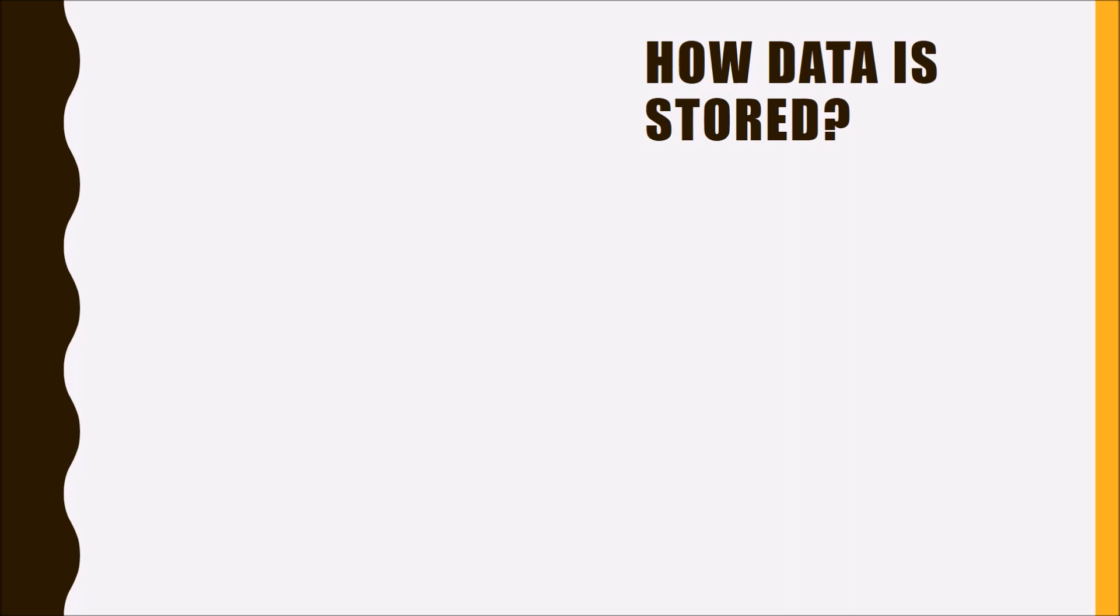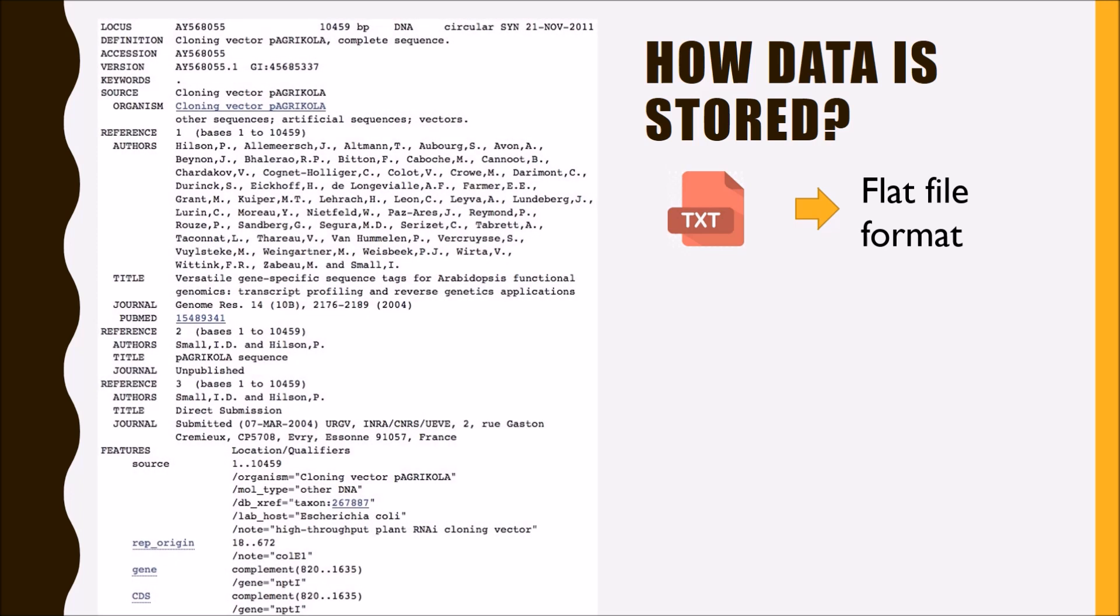So how is the data stored in these databases? Data is stored in the form of flat files, which are just text files in a particular format in which fields are terminated by delimiters. For example, this is a GenBank format which is used to store a nucleotide sequence file.